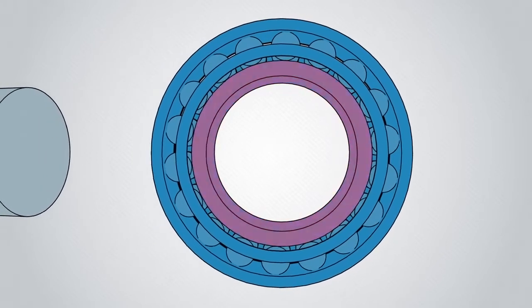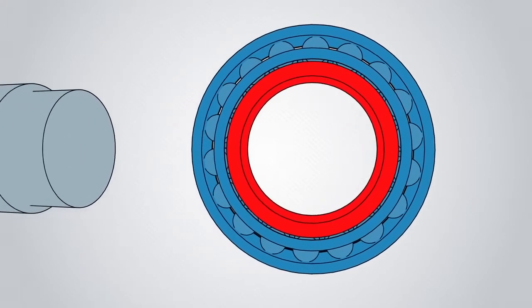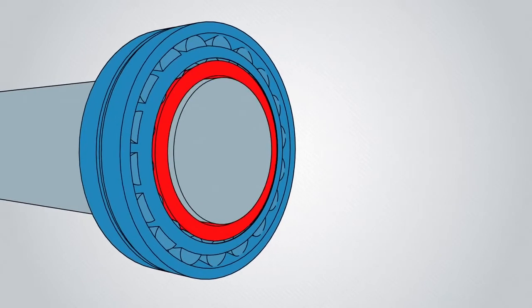This is why heat is used to expand the bearing inner ring before placing on the shaft. As the bearing cools, a stronger interference fit results.